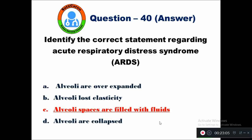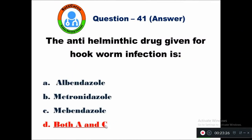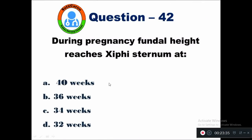Question 41: The antihelminthic drug given for hookworm infection is — option A albendazole, B metronidazole, C mebendazole, D both A and C. The antihelminthic drugs given for hookworm infection are albendazole and mebendazole. Option D — both A and C — is the right answer.